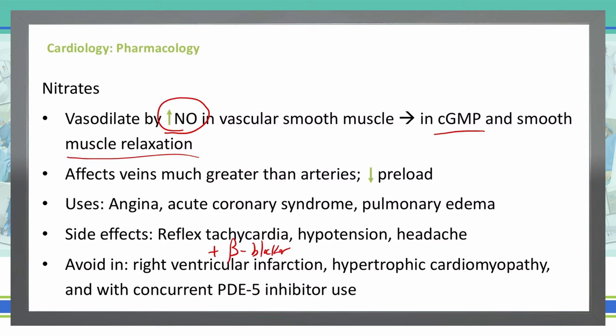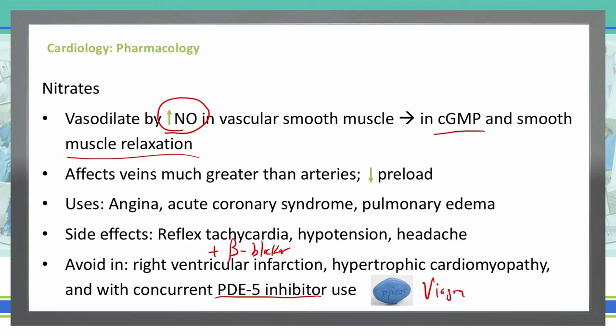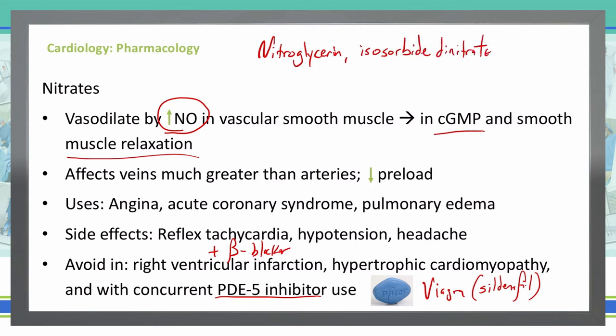We also avoid nitrates in cases of hypertrophic cardiomyopathy, as well as if patients are concurrently using a PDE5 inhibitor. A good example of a PDE5 inhibitor is that little blue pill, also known as Viagra — generically known as sildenafil. Some examples of nitrates include nitroglycerin, isosorbide dinitrate, and isosorbide mononitrate.